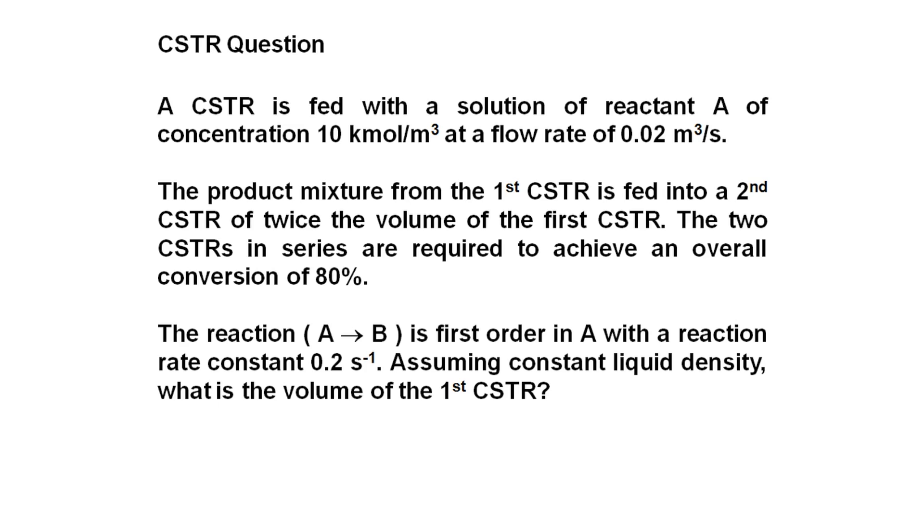The product mixture, so the solution coming out of that first CSTR, is going into a second CSTR and that second reactor has twice the volume of the first one. The two in series have a conversion of 80%. The reaction involved is A being converted to B, which is first order with respect to A and the rate constant is 0.2.